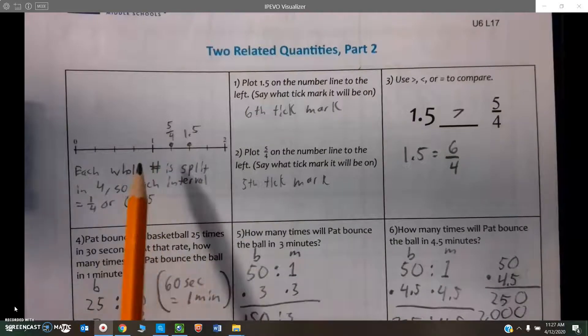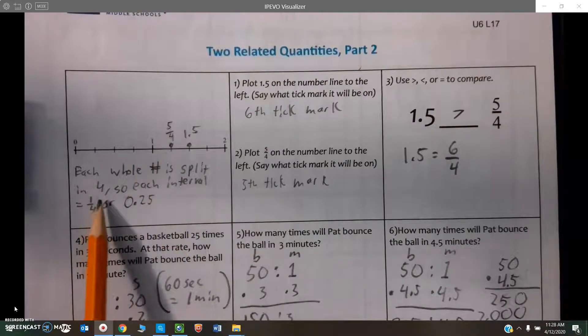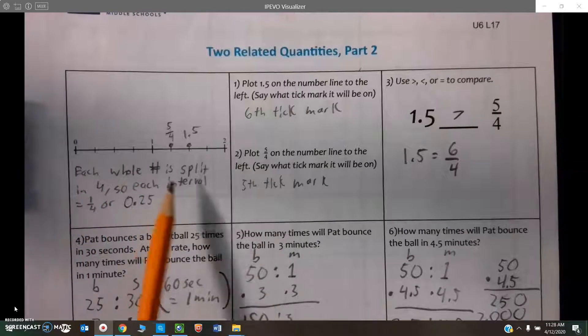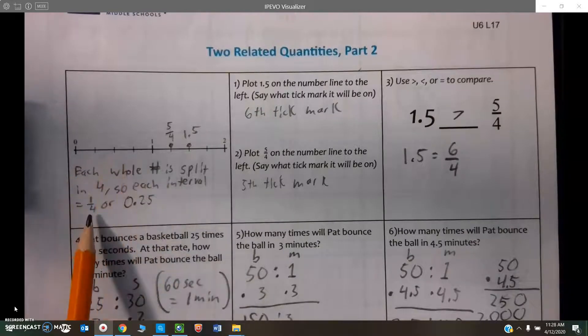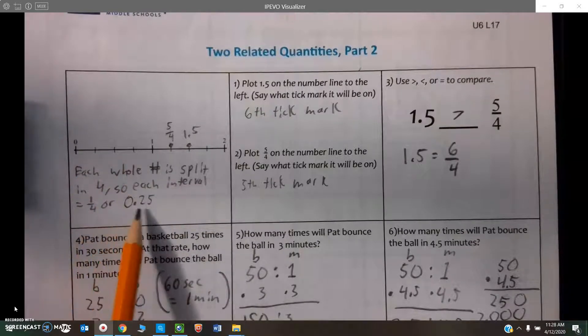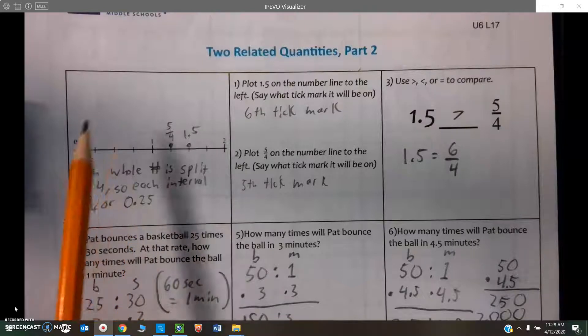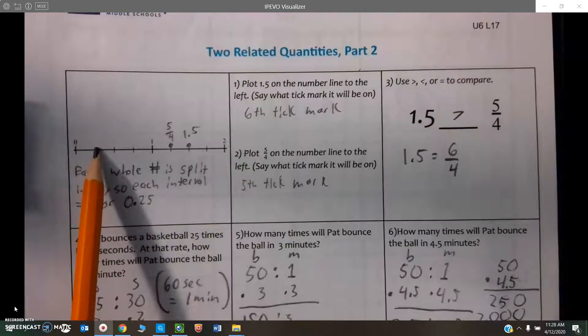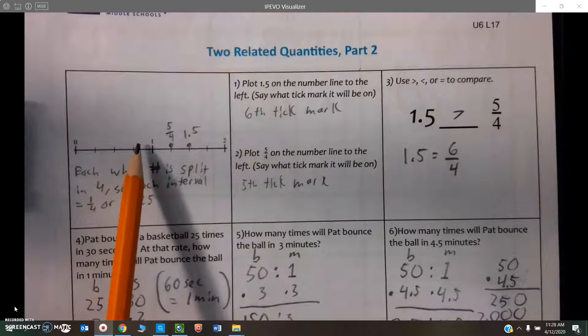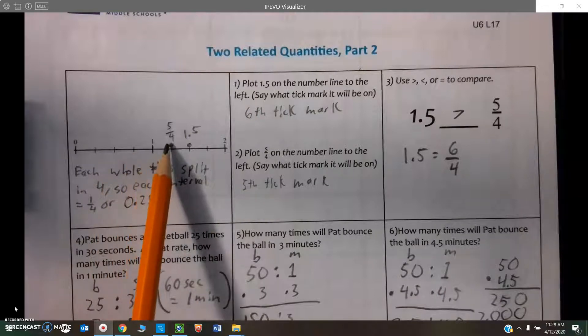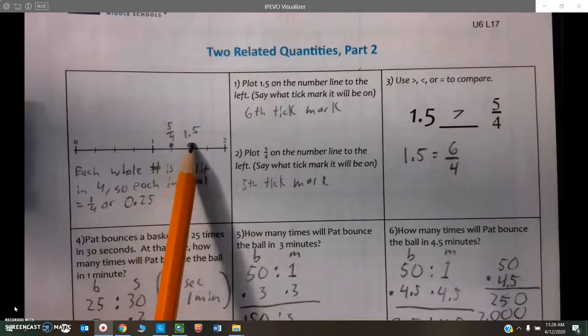The reason is each whole number is split in four equal pieces, so that means each tick mark is 1/4 or, as a decimal, 0.25. So that would be 0.25, 0.50, 0.75, one whole, 1.25, 1.5.